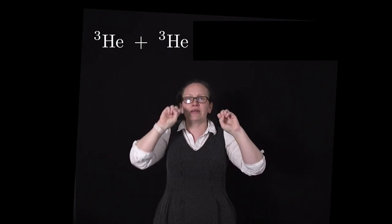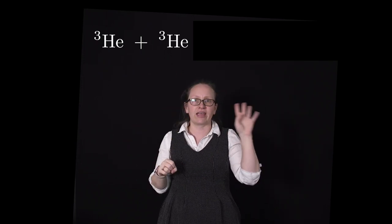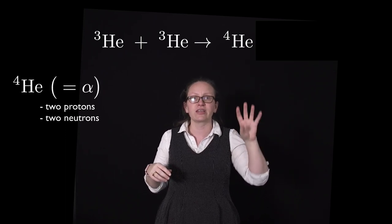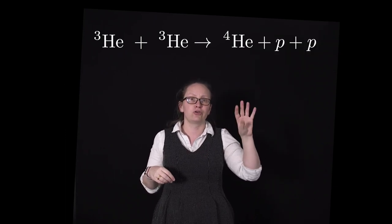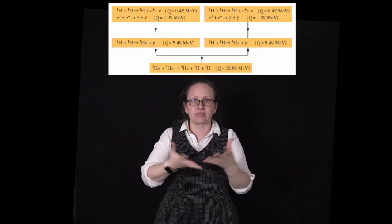So when it does happen we have the helium-3 plus the other helium-3. These combine to create helium-4 so an alpha particle with two protons and two neutrons and then we also get two protons given off in this process. So that's the entire cycle.